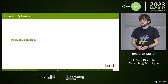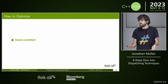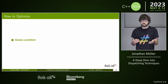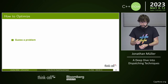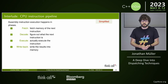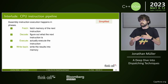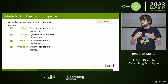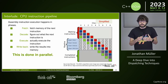How to optimize? Step one: guess the problem. Let's guess the problem is branch prediction. The CPU executes assembly instructions in phases: fetch memory, decode, execute, write back — done in parallel. While executing one instruction, it starts fetching the next. But this can only be done in parallel if the CPU knows what the next instruction will be — if there's a branch, it has no idea.